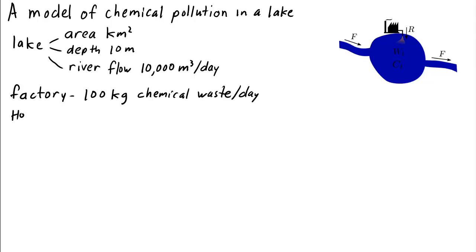Given this information, we might like to calculate how much chemical waste will be in the lake in the days succeeding the factory being built. To answer this question, we'll develop a discrete dynamical system model of the lake and factory. To begin, let's introduce some notation.